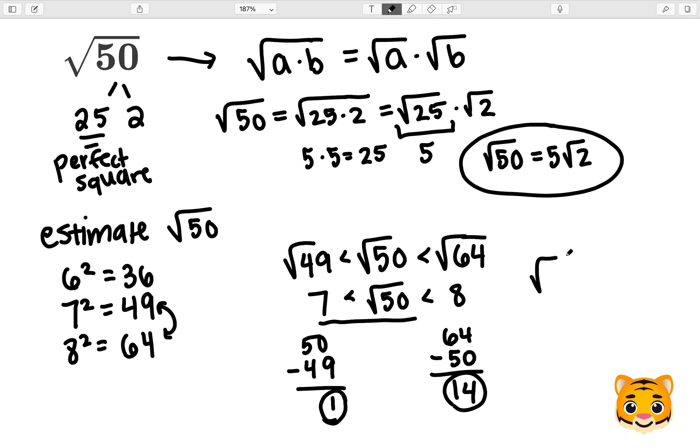Because of this, we can now say the square root of 50 can be approximated to about 7. So for our final answer, we can say the square root of 50 simplifies to 5 times the square root of 2. And also, if we estimate the square root of 50, we'll find out that it's approximately 7.